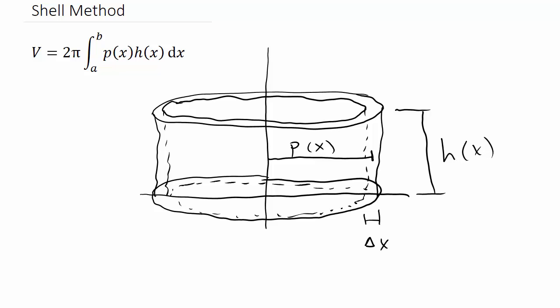The shell method has V equals 2π times the integral from a to b of p(x) times h(x) times dx. If you look at the figure I have drawn, here's revolving a shell about the y-axis.